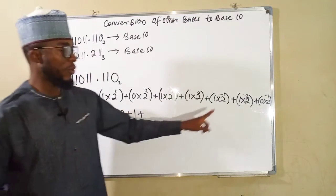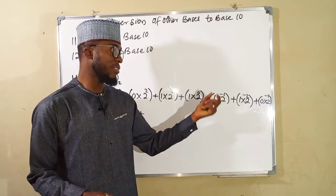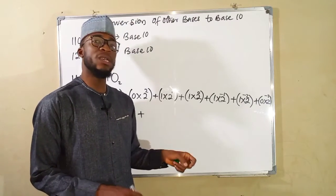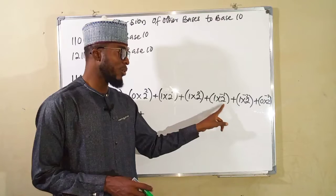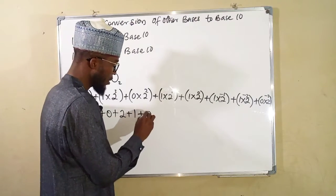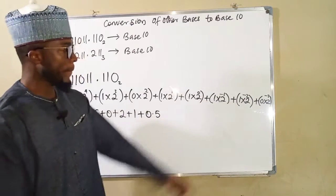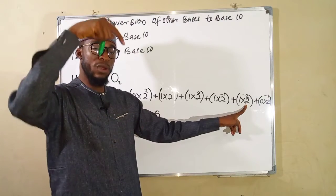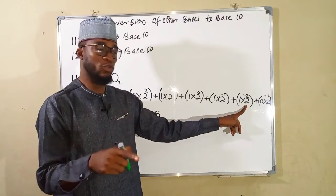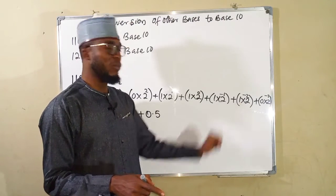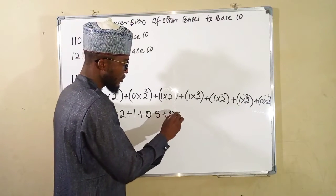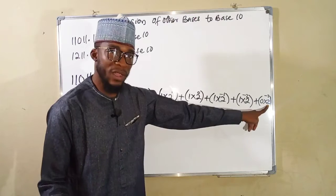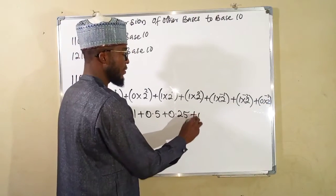Then 1 times 1 is 1. We add. 2 to the power negative 1 is 1 over 2, which is 0.5. 2 to the power 2 is 4; 1 over 4 is the same thing as 0.25, and 0.25 times 1 is still 0.25. Then the last one: 0 times whatever is 0, so we have 0.